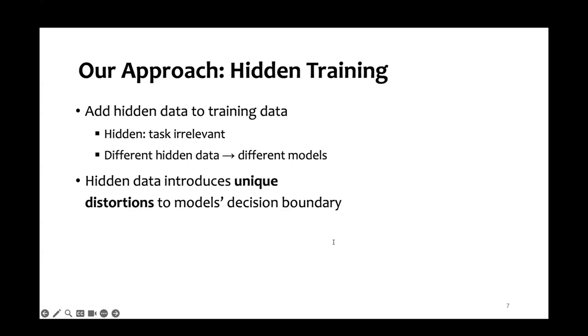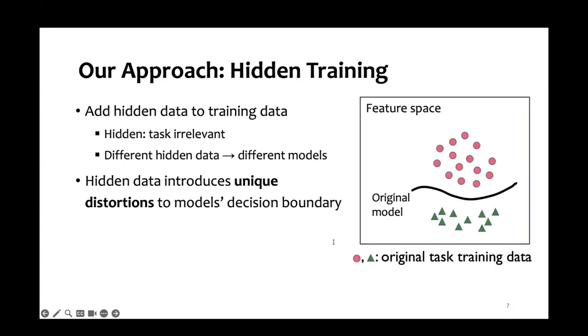The intuition is that hidden data can introduce unique distortions to model's decision boundary. Here's a simple illustration. Without any hidden data, this is the original model decision boundary. After we add hidden data, we can effectively distort this model's decision boundary. By changing model's decision boundary, we can then reduce attack transferability.